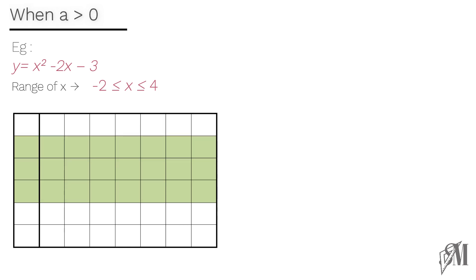First let's find the coordinates. For that we arrange a table. The x values are taken from minus 2 to 4 as the range is mentioned. Let's see how to fill this. x squared terms are taken by squaring the x values, that is minus 2 squared is 4 and minus 1 squared is 1 and so on. The next row is minus 2x. We multiply each x value by minus 2 to fill this row, so minus 2 into minus 2 is 4 and minus 2 into minus 1 is 2 and so on.